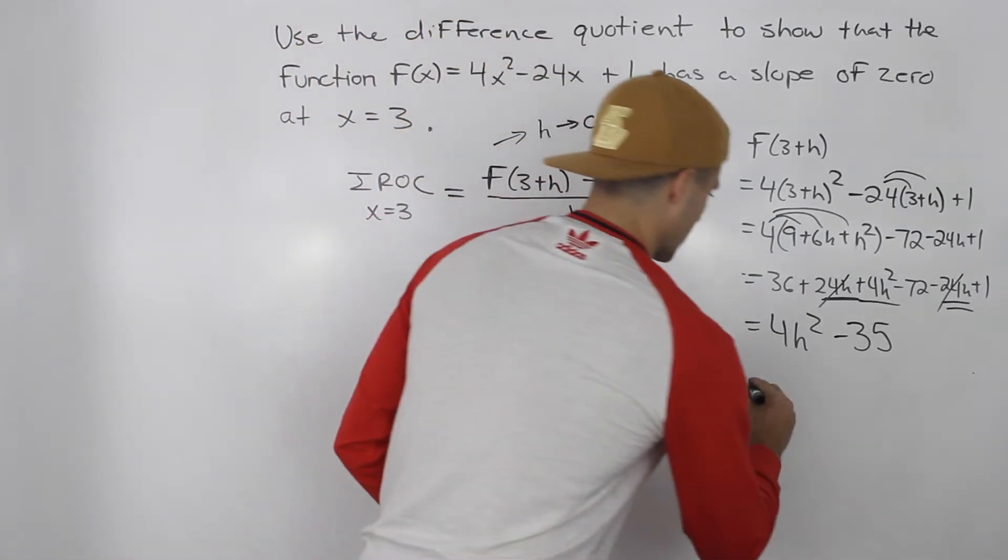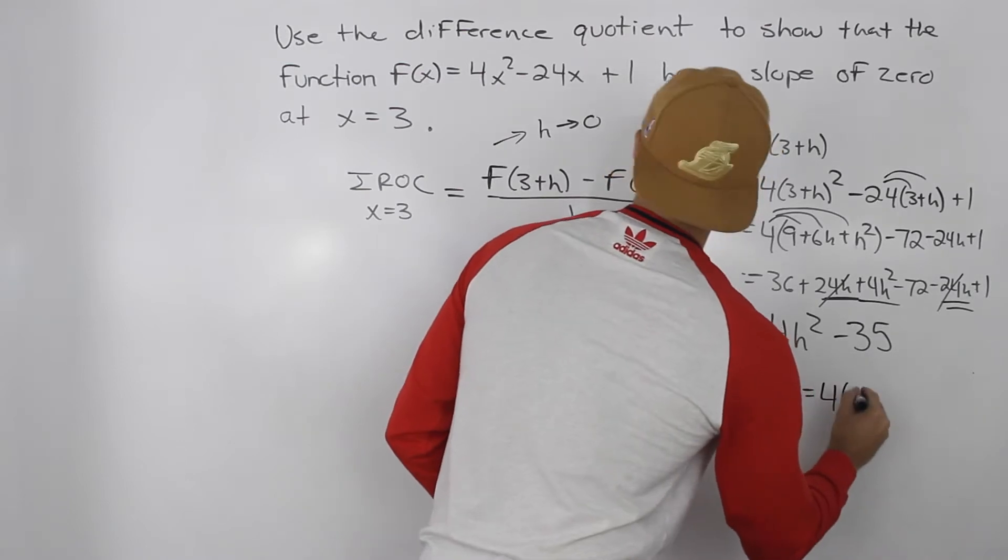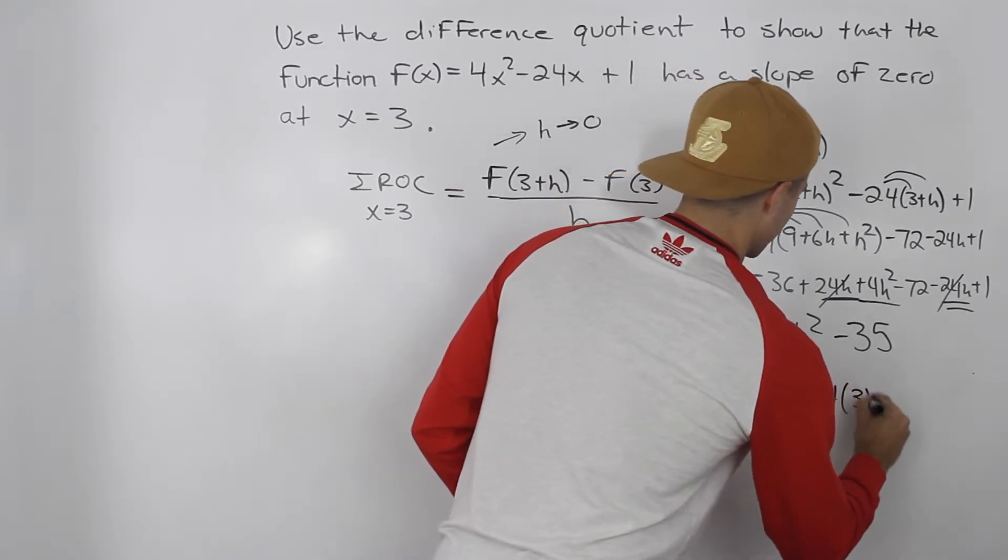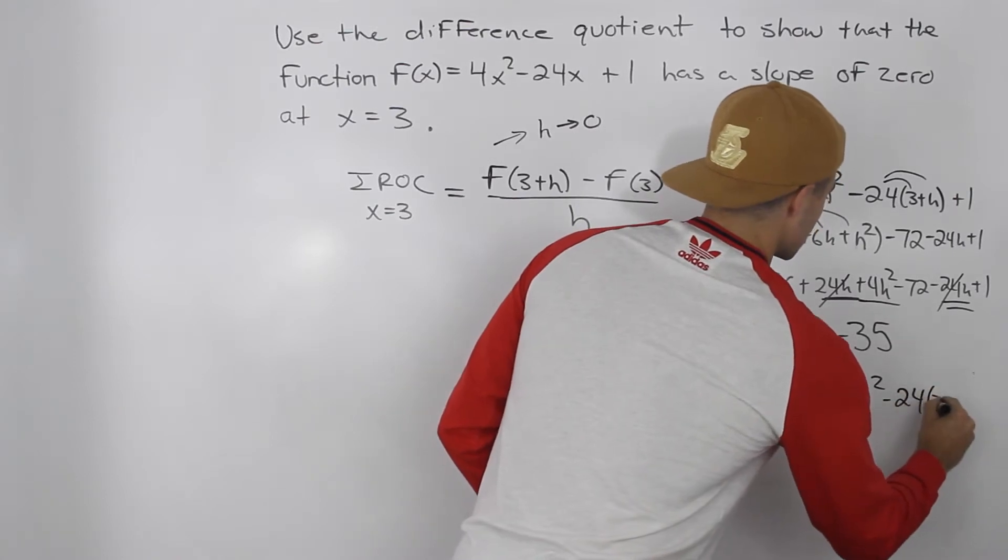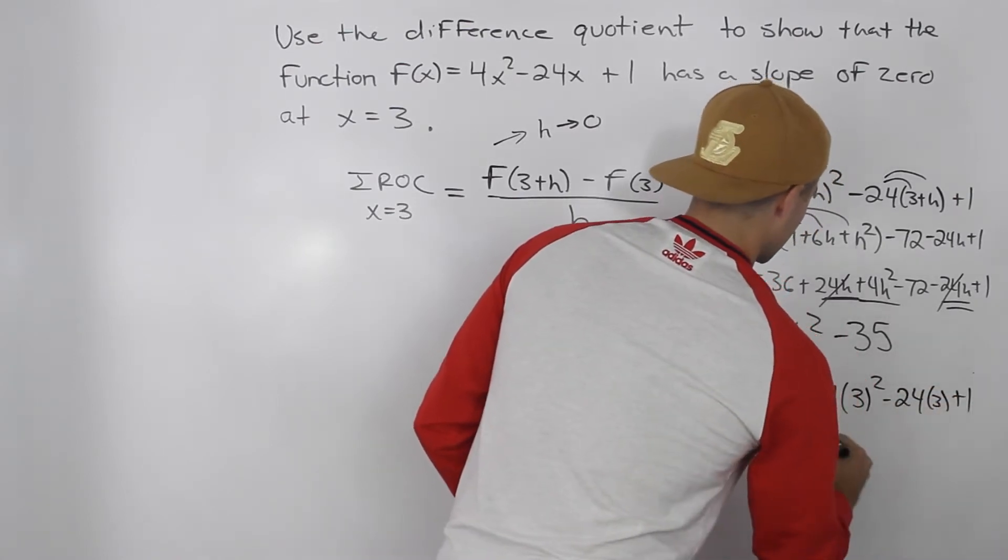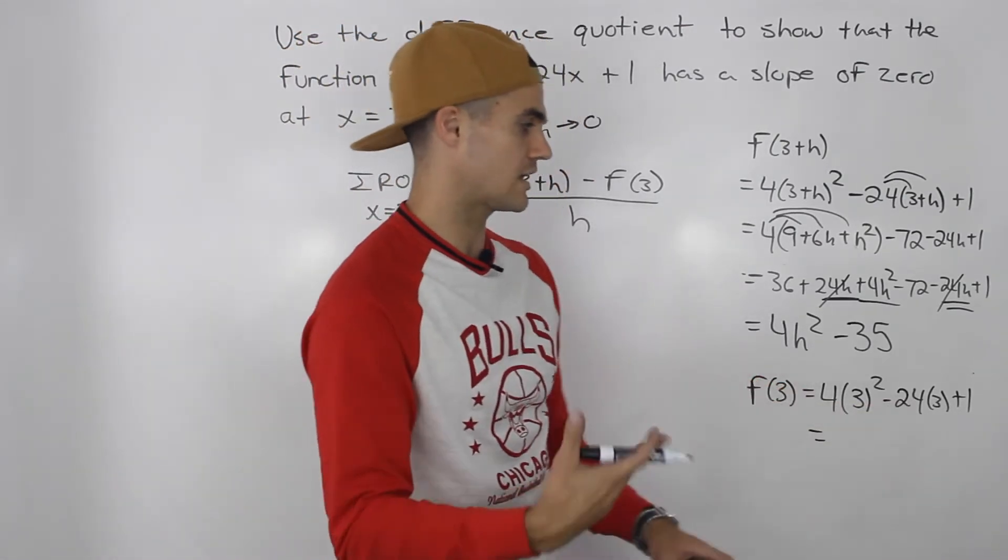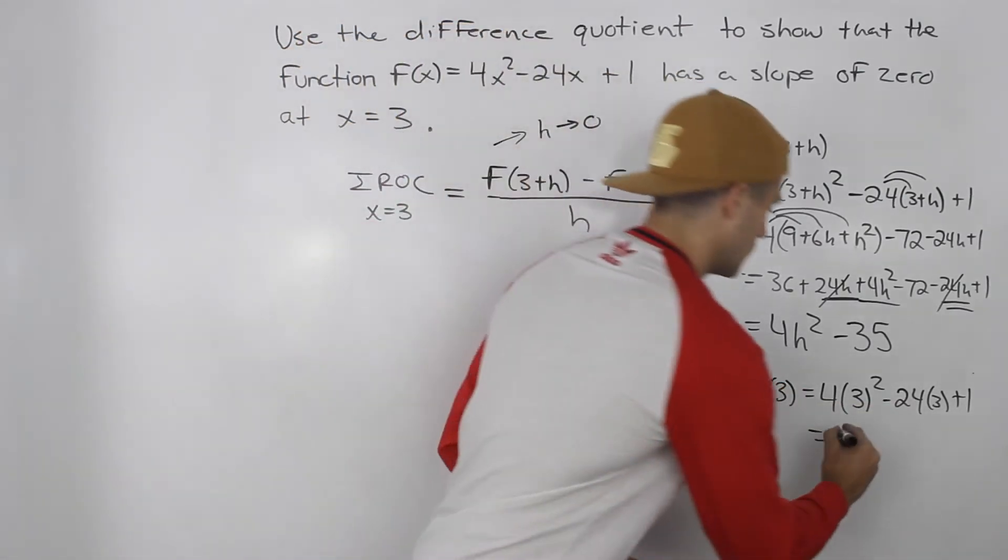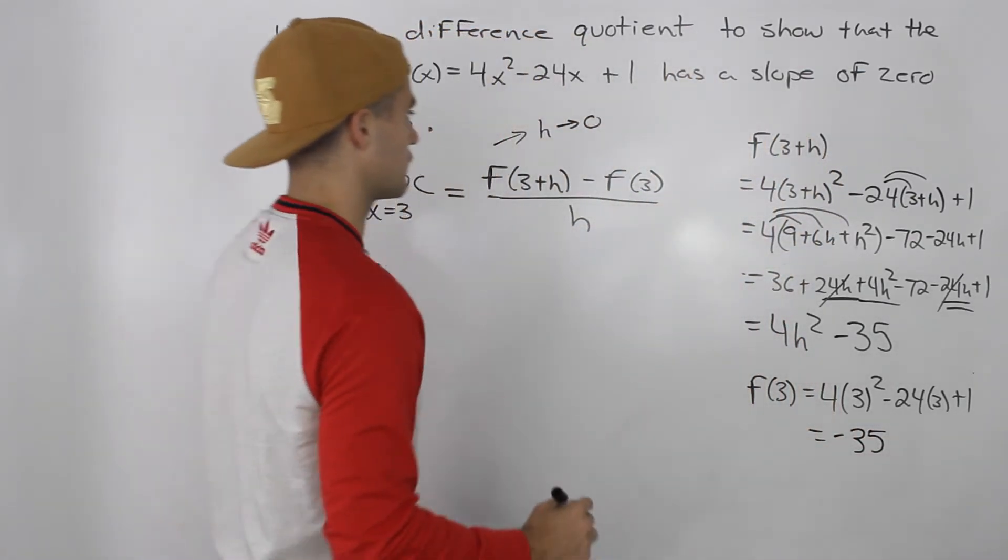And we also have to find out what's f(3) going to be. So we have to plug in 3 for all the x's. So we have 4(3²) - 24(3) + 1. So we'd have 9 times 4, 36 minus 72 which is negative 36 plus 1 would give us negative 35. So f(3) is -35.